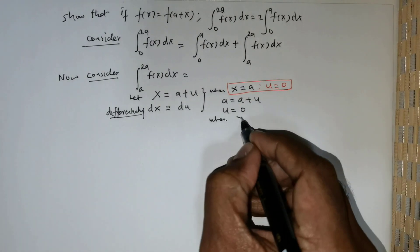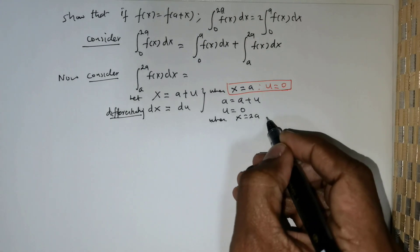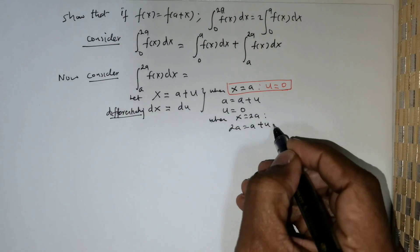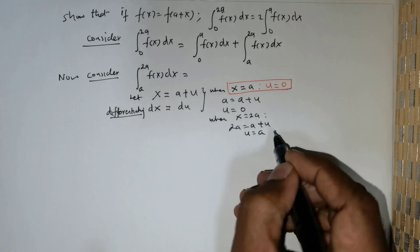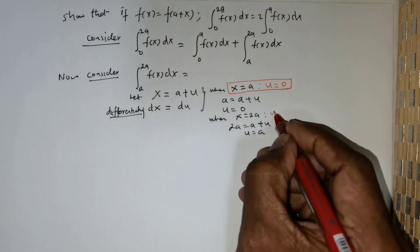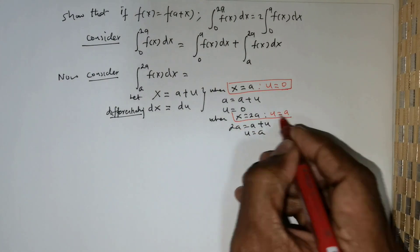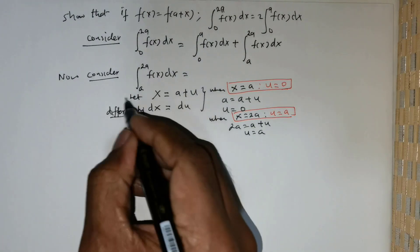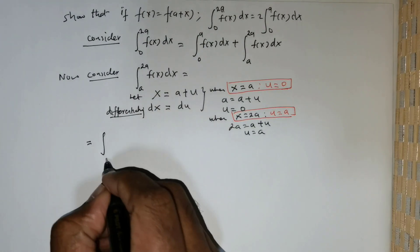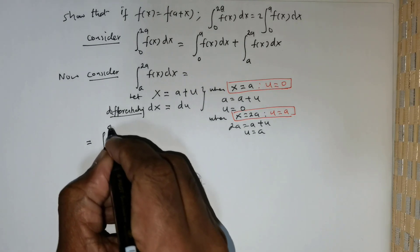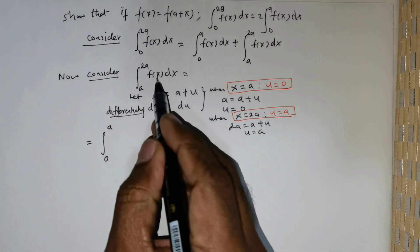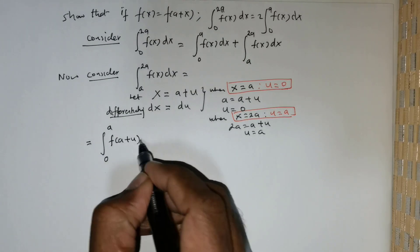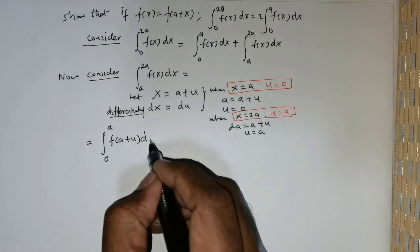Next, when x is equal to 2a, we have 2a equal to a plus u, therefore u is equal to a. So u equals a is the next limit. The integration can now be rewritten as the integral from 0 to a of f of a plus u, du.